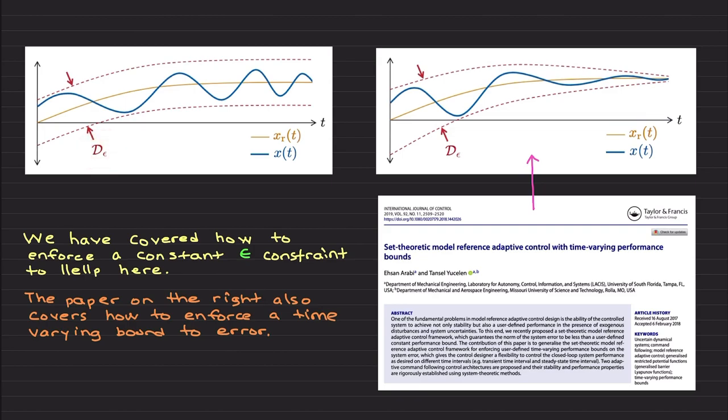So you can make this D epsilon set shrink. You can also use this: initially, let's say your initial e0 due to maybe measurement noise is large, you can start from a larger set, then you converge to a smaller D epsilon set. Basically, the paper on the right here also covers how to enforce a time-varying boundary error. I am not planning to cover it right now in this video, but if you are interested, you can download and read this paper, which extends constant Lyapunov barrier function to a time-varying one.